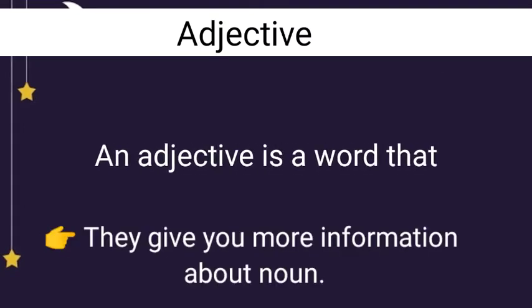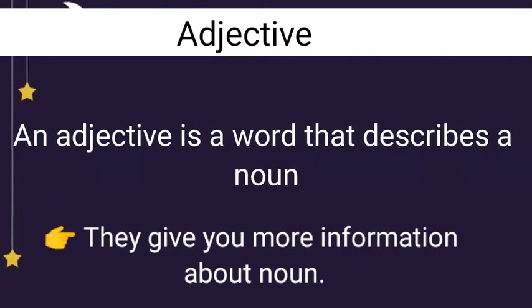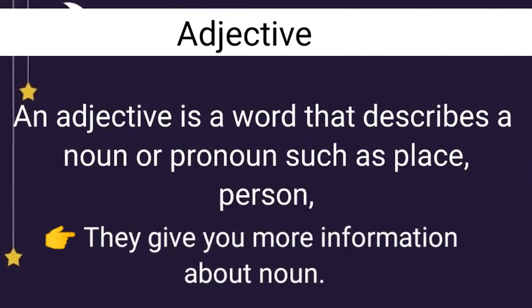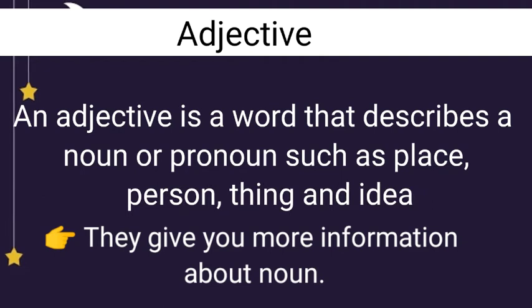An adjective is a word that describes a noun or pronoun such as place, person, thing and idea. They give you more information about noun.